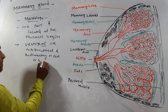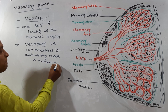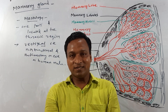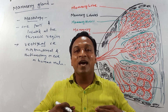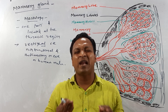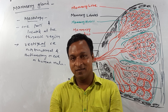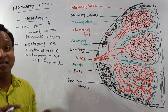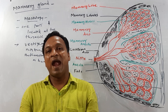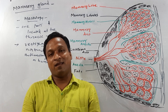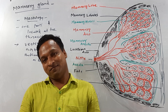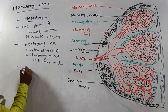Mammary glands are found in both males and females. In males, they are rudimentary, non-functional, and do not produce milk. In females, they are functional and produce milk, helping in parental care — basically nourishing the baby.